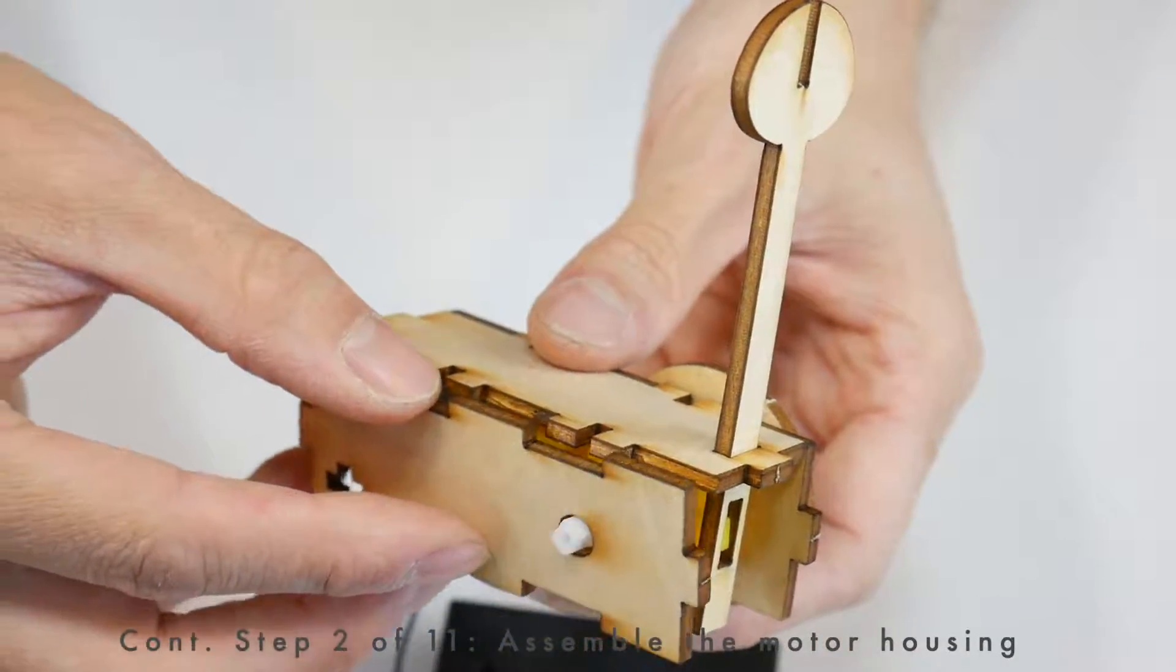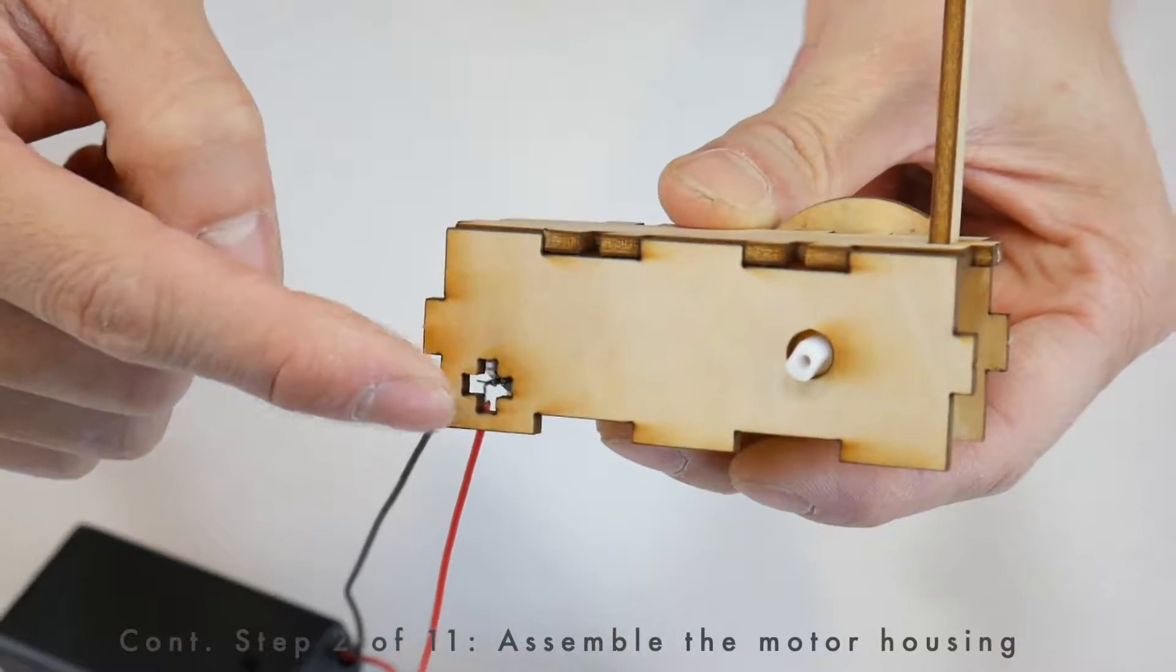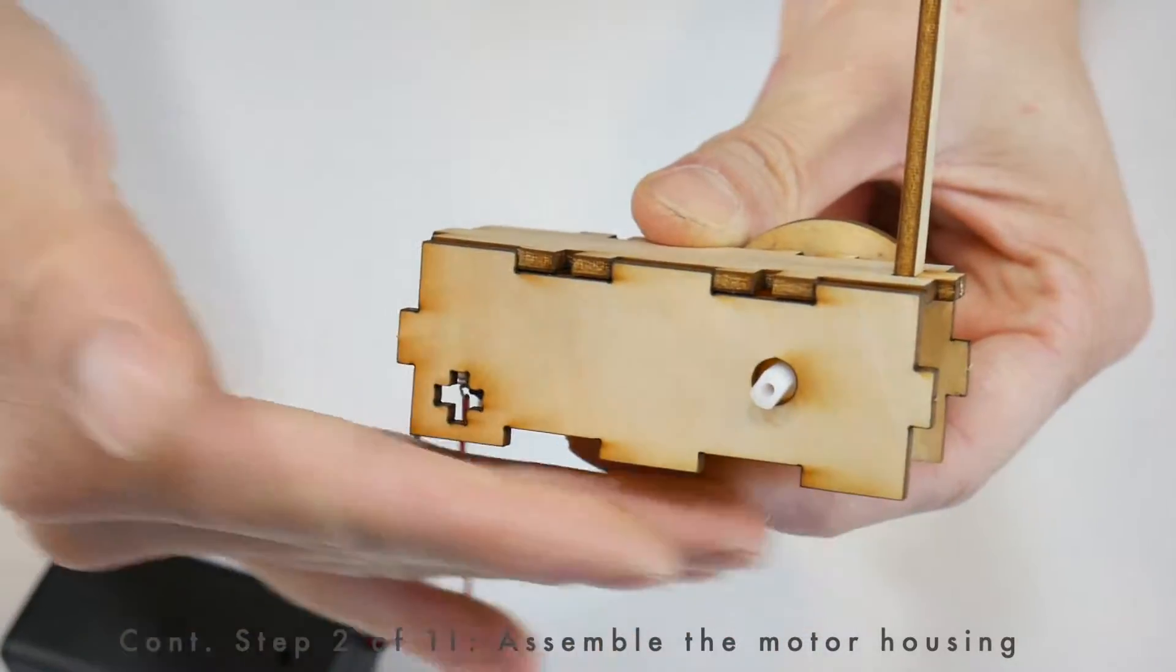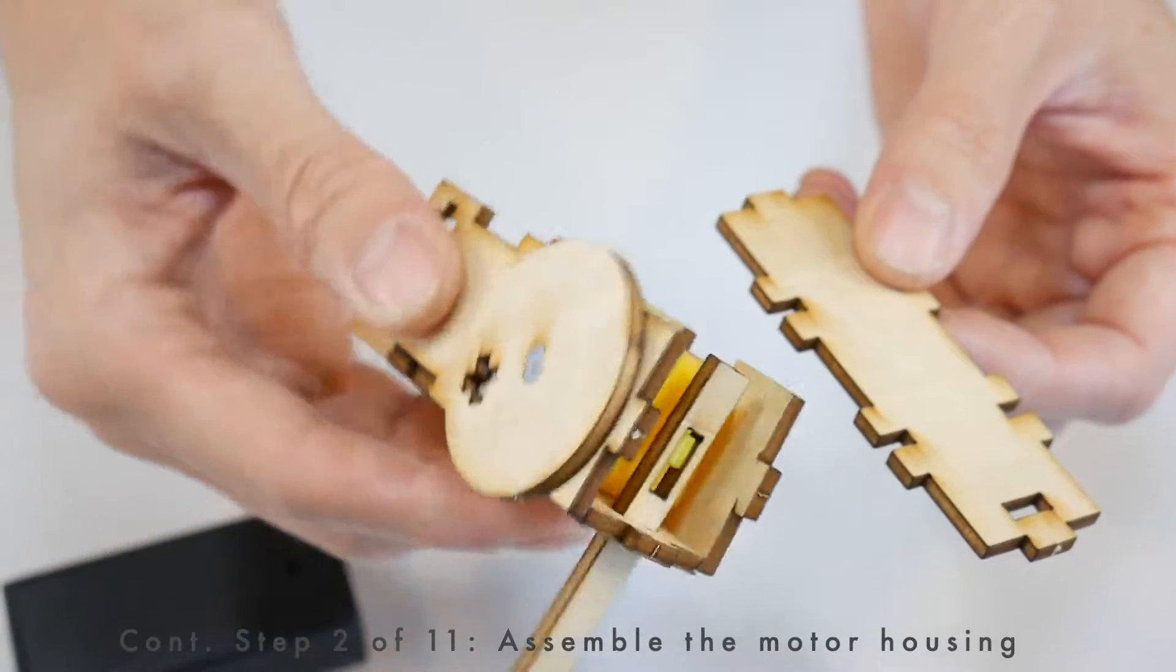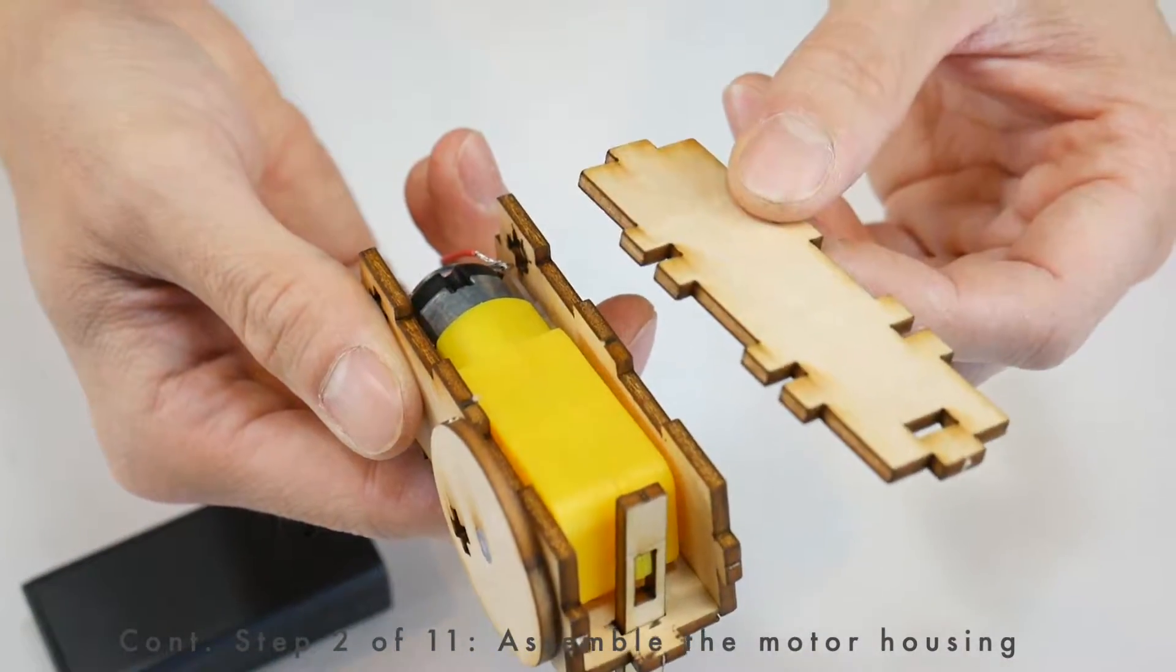Now go ahead and add the other side piece. Again, make sure that this cross connector is near the bottom of the robot. We're going to flip it upside down and attach one of these pieces to the bottom.